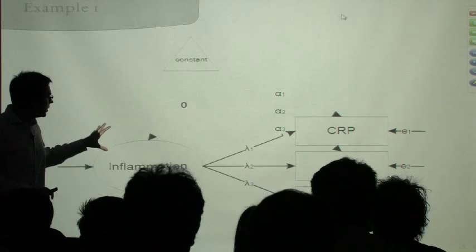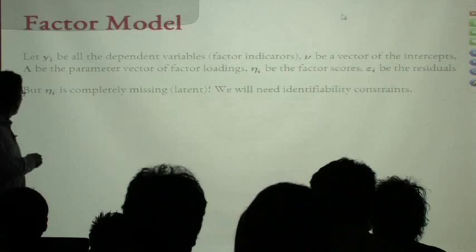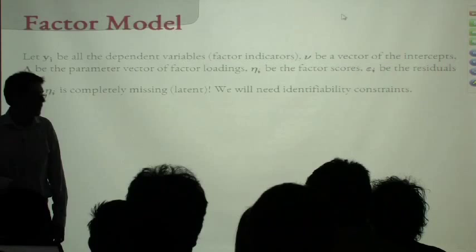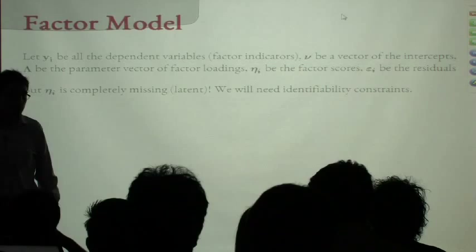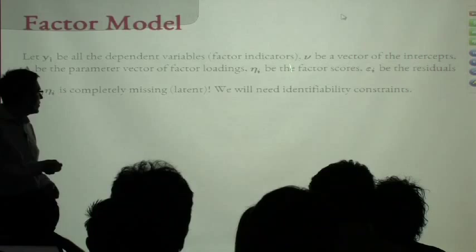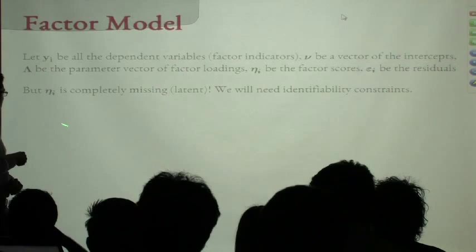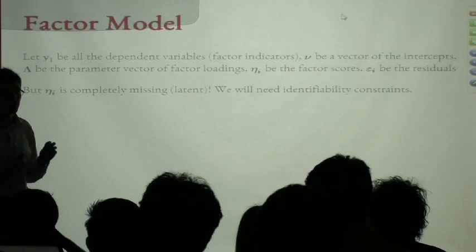Unlike regular regression, eta isn't a predictor we've measured — it's an unobserved construct we believe exists (inflammation). We have no observations of inflammation itself, but we have hypotheses about what we would observe in the data if we had measured it. Think of the matrix equivalent of regression: all dependent variables equal nu plus lambda-eta plus epsilon. We model the variance-covariance matrix sigma as the cross product of lambda and psi (variance-covariance of the latent variables) plus theta (residuals matrix).